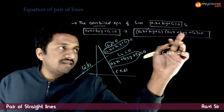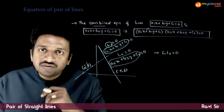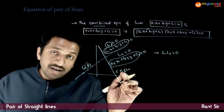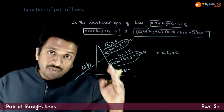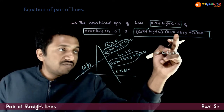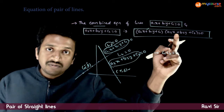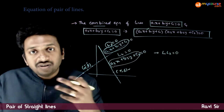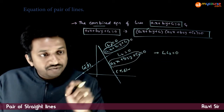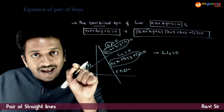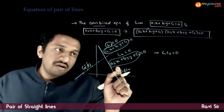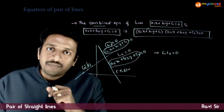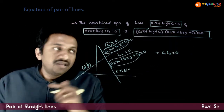So, 0 into anything is equal to 0. And if you take any point (γ, δ) on the second line, this expression will become 0. Hence, this combined expression will be satisfied. So, if you take any point either on the first or on the second line, they satisfy this combined equation.